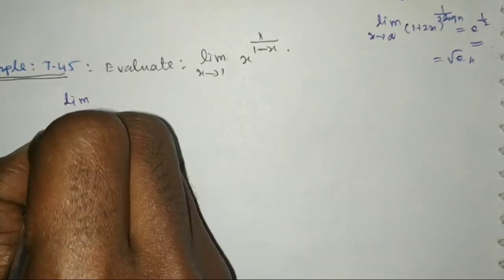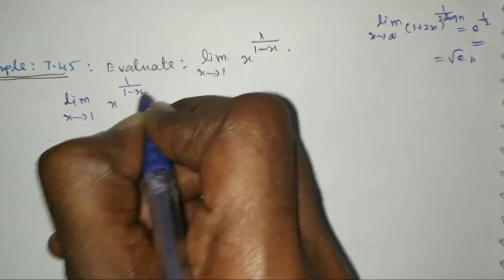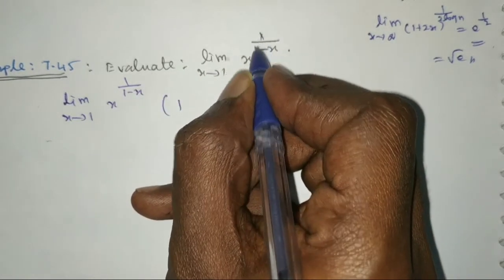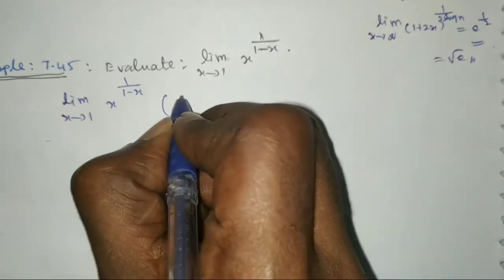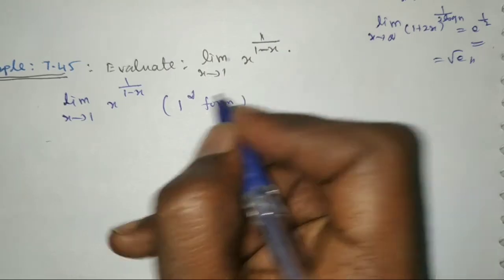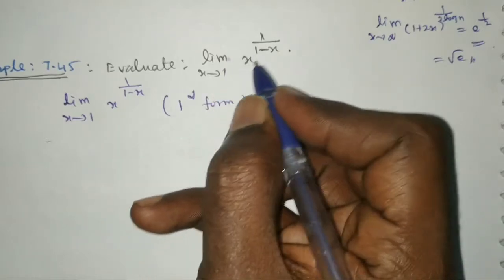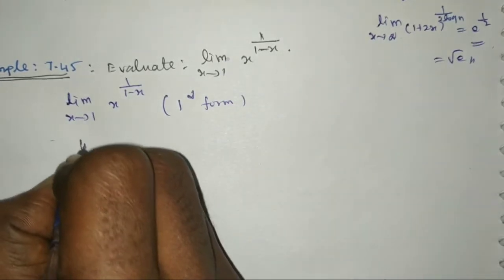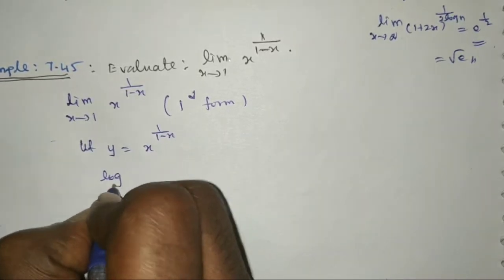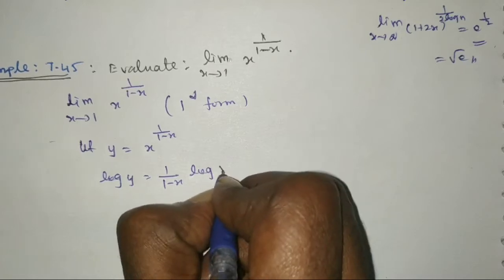Applying the limit: x^(1/(1-x)) gives 1^(1/(1-1)) = 1^(1/0) = 1^∞, which is an indeterminate form. So we let y equal x^(1/(1-x)) and take the log: log y equals (1/(1-x)) times log x.